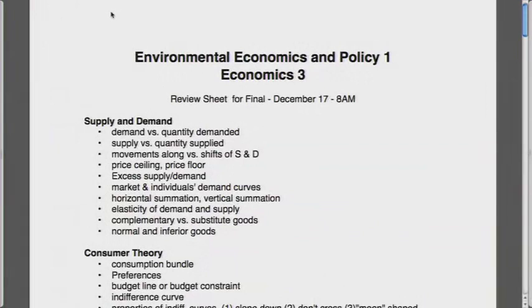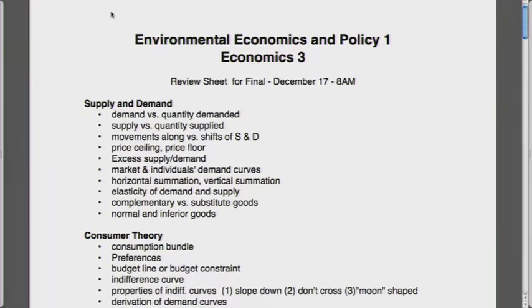The first will be just about a list of terms in the second half we got from the midterm. So we have supply-demand curve, prices, movements along supply-demand, shifts of supply-demand, market demand versus individual demand, summation, horizontal summation, vertical summation, complementary goods substitutes, normal and inferior goods.